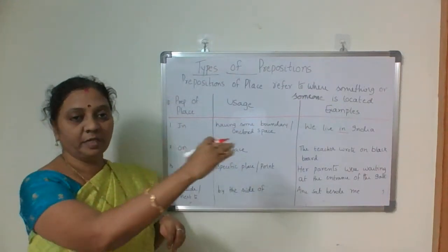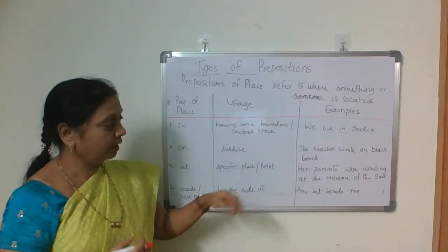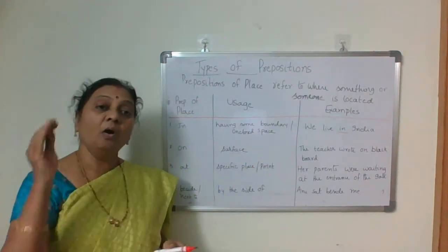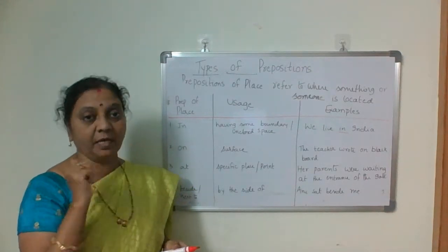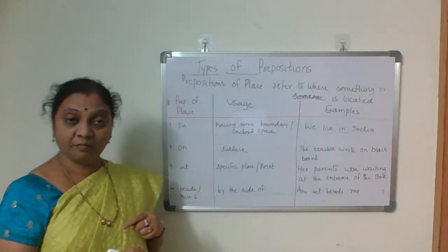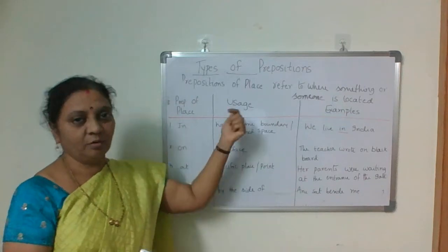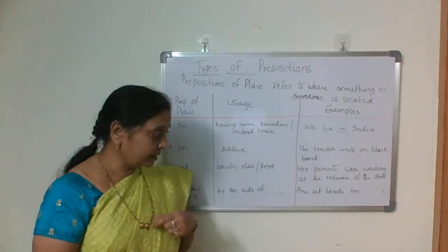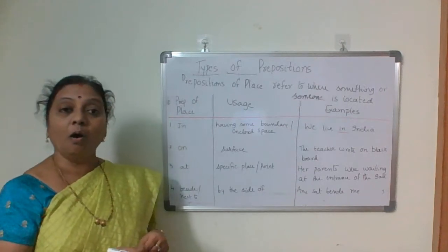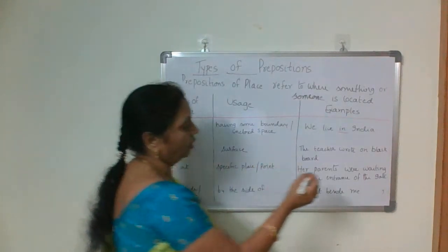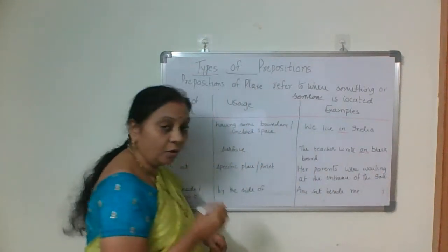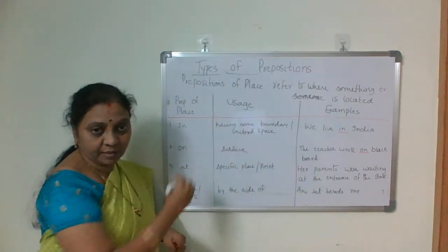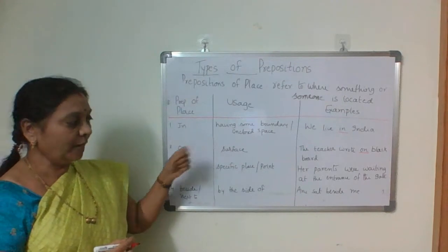'On' means surface. For example: 'The book is on the table.' Time always refers to when; place always refers to where — if you ask where, you get the answer. 'The teacher wrote on the blackboard.' — on that surface we write, so we say 'on blackboard'.